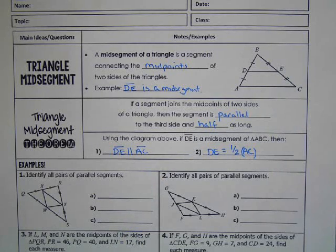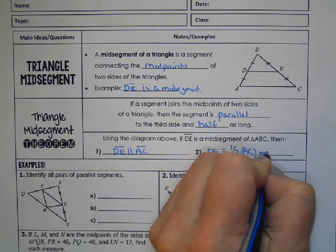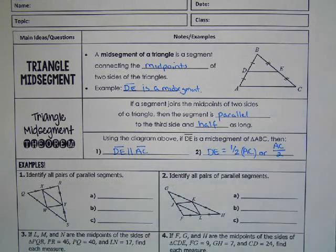If you want to write that a different way, you can say AC divided by two. And a triangle can have more than one midsegment. It depends on which way you're looking at the triangle.